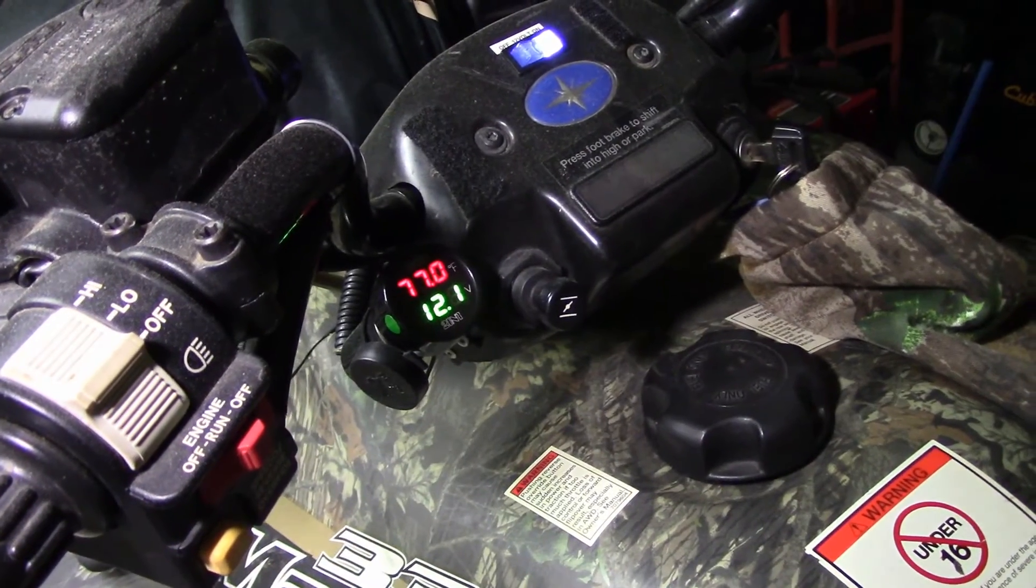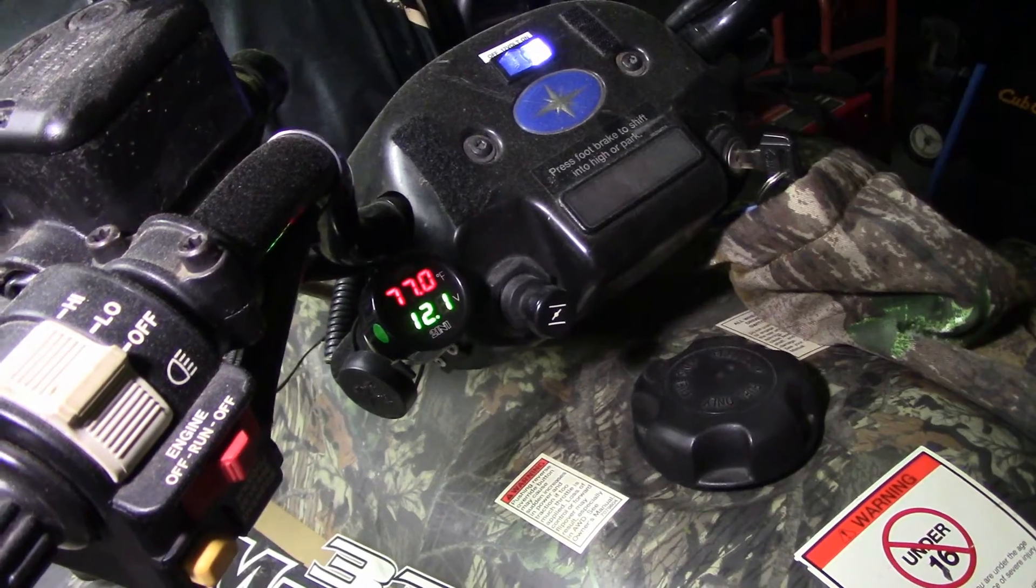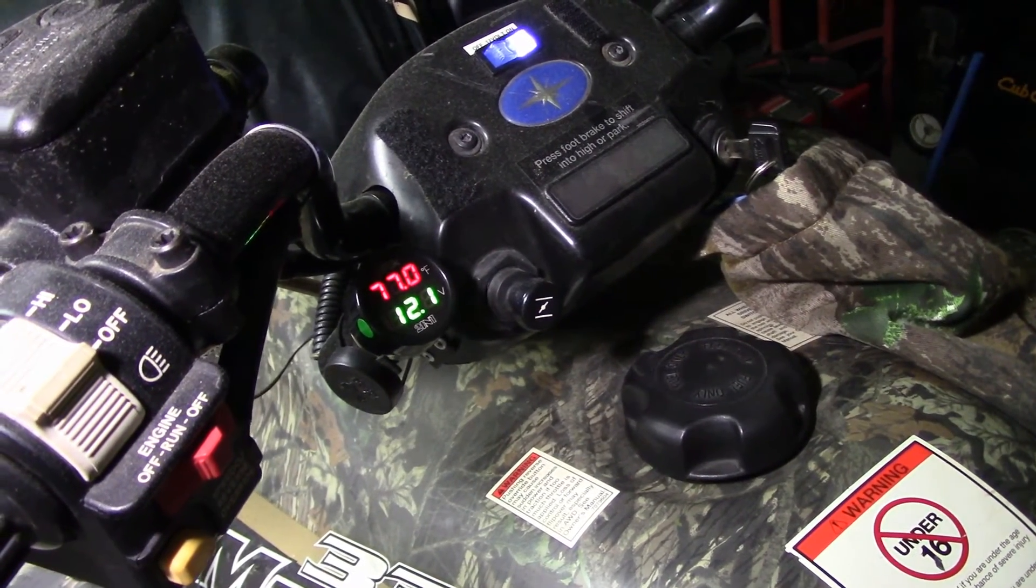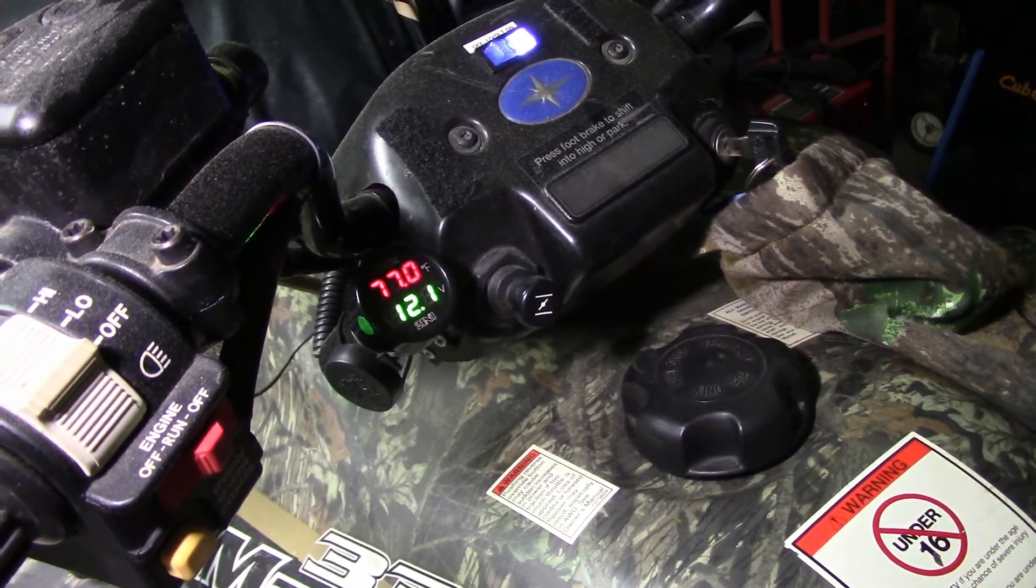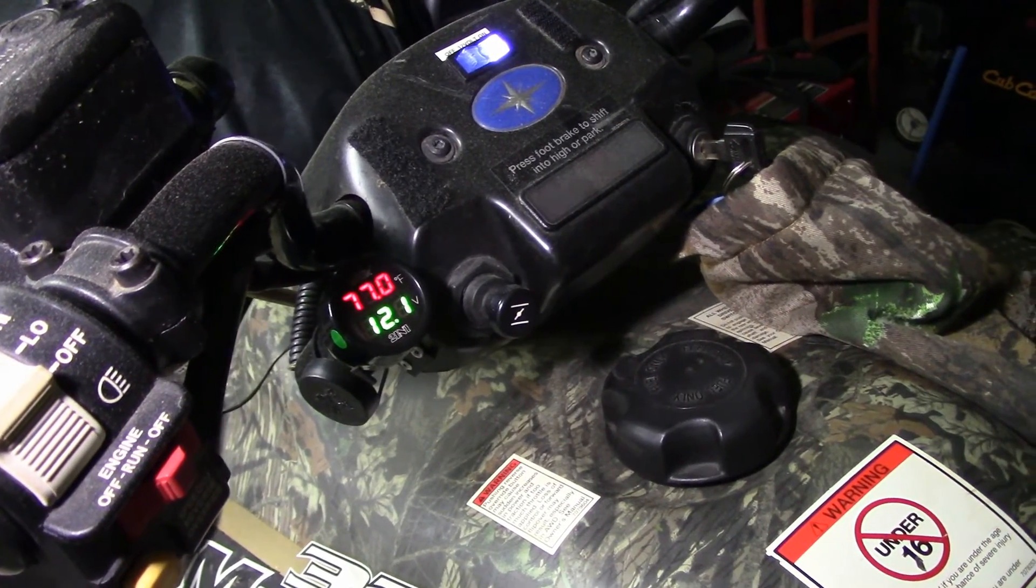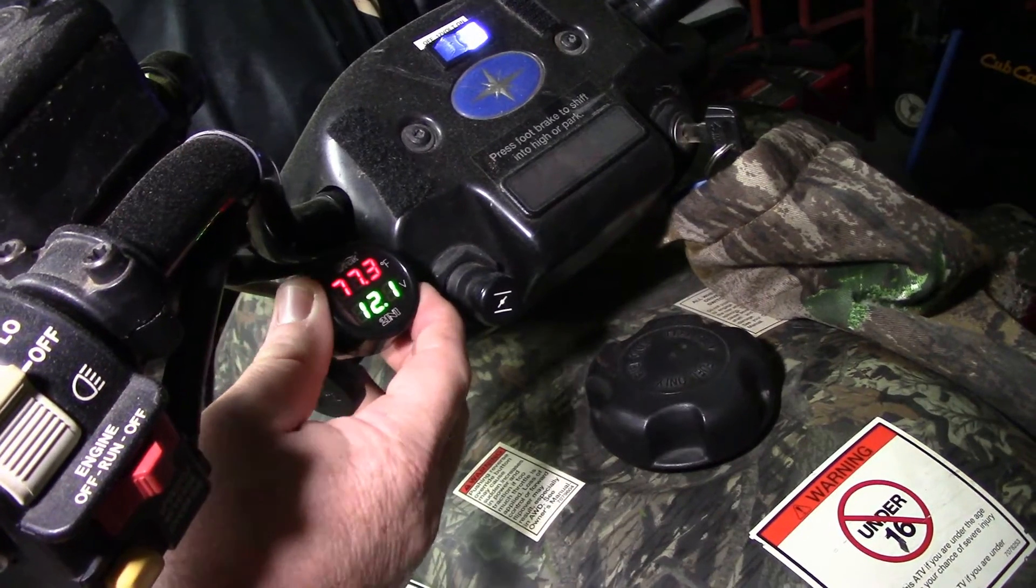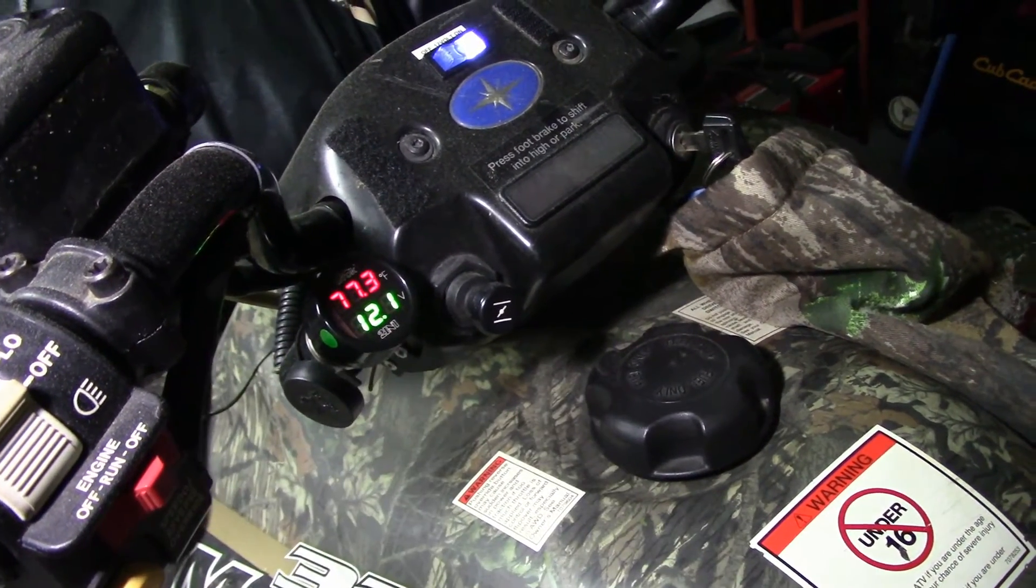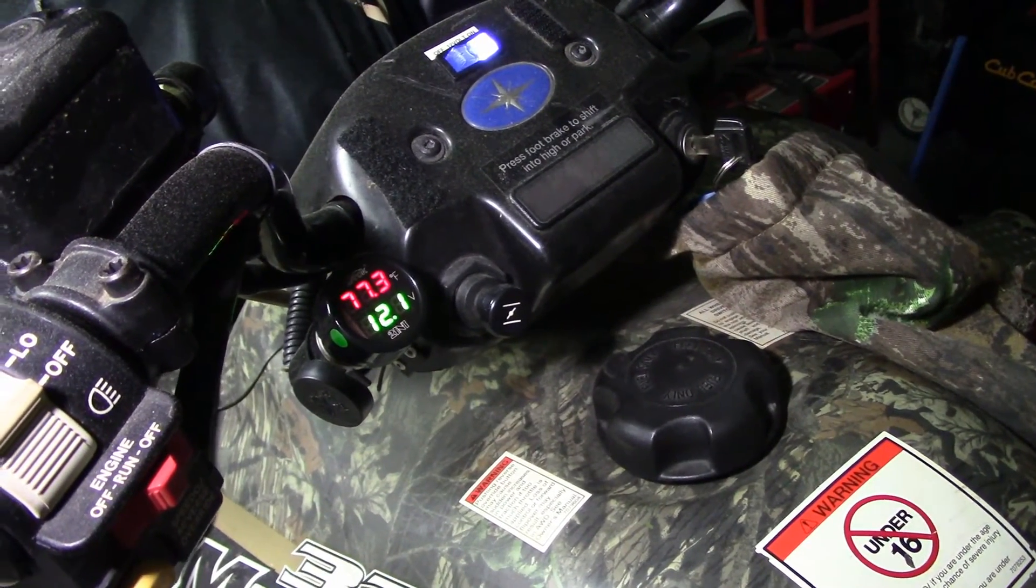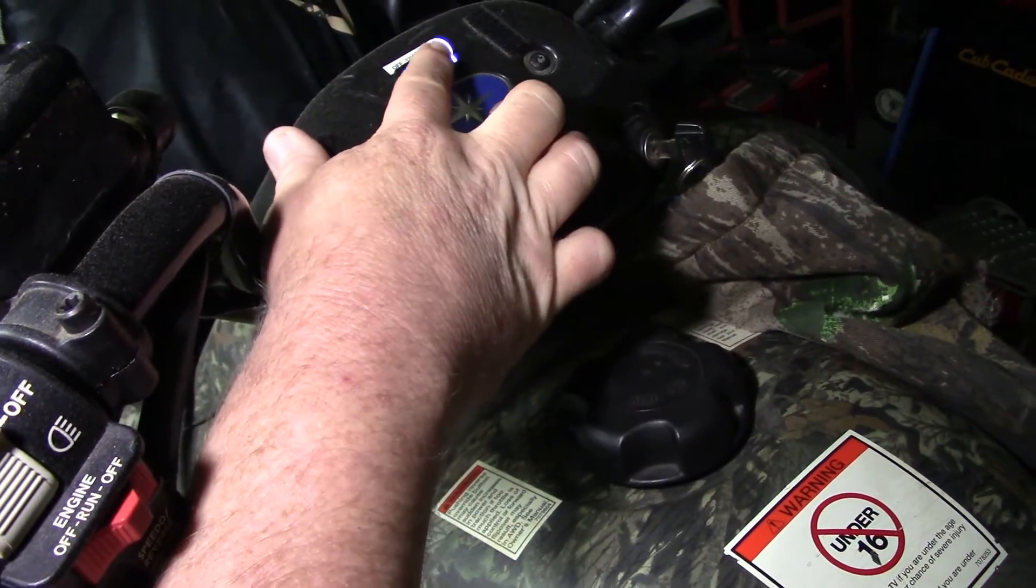All right, this is what I did to my wife's four-wheeler. If you can see from here it's got 77 degrees and it's 12.1 volts. What I did is I made a little 12 volt receptor right there so when she got running she can tell what it is. On ours I made it an on off switch.